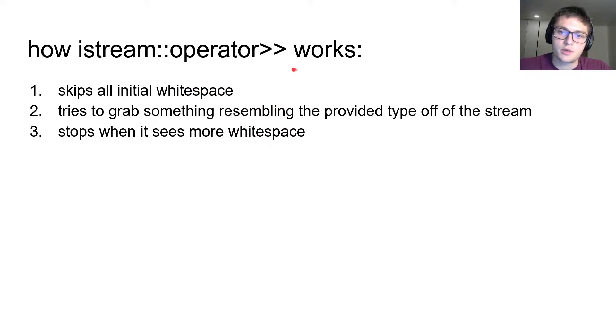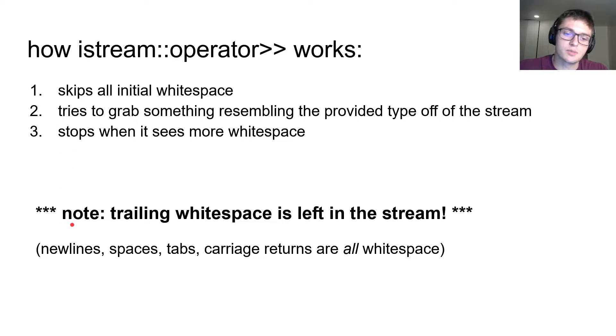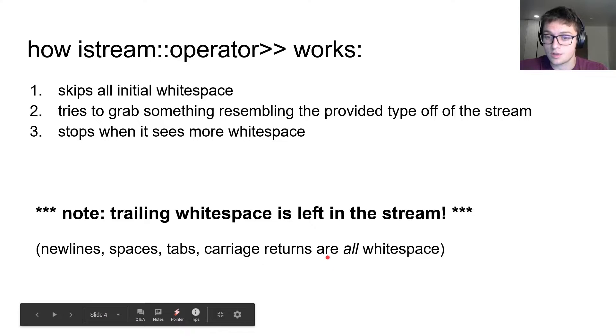Here is how the iStream operator works. Of course you're probably already going to know this, but knowing these exact steps is very important. First things first, it skips the initial white space. Then it tries to grab something resembling the type that you gave it off of the stream and it stops when it sees more white space. And that's extremely important, that the trailing white space is still in the stream. And white space includes our friend the newline, spaces, tabs, and carriage returns.